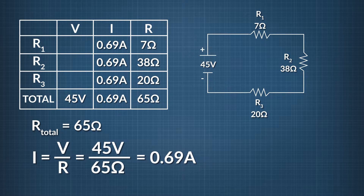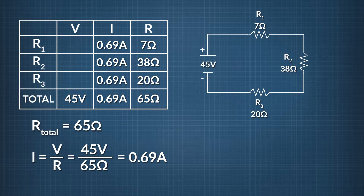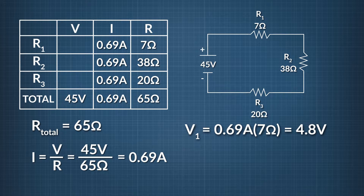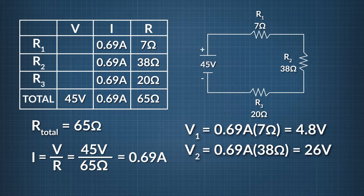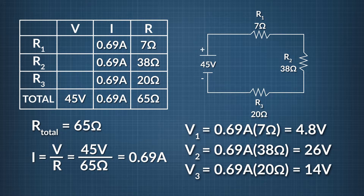The last thing left is to solve for the voltage across each of the three resistors. Using Ohm's Law — anytime you know two out of three variables in a row, you can solve for the third. The voltage across R1 equals 0.69 amps times 7 ohms, which equals 4.8 volts. The voltage across R2 equals 0.69 amps times 38 ohms, which equals 26 volts. The voltage across R3 equals 0.69 amps times 20 ohms, which equals 14 volts.